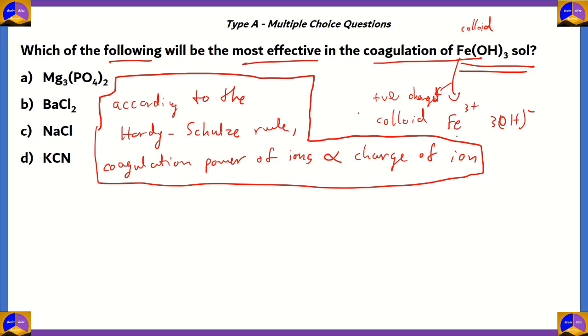Just box that out so that it stays, so that it's important. So, therefore, when we look at the rule, the rule says the coagulation power is directly proportional to the charge of the ion. Now, we know that Fe(OH)3 is positively charged colloid. Now, that means it requires an anion to coagulate.